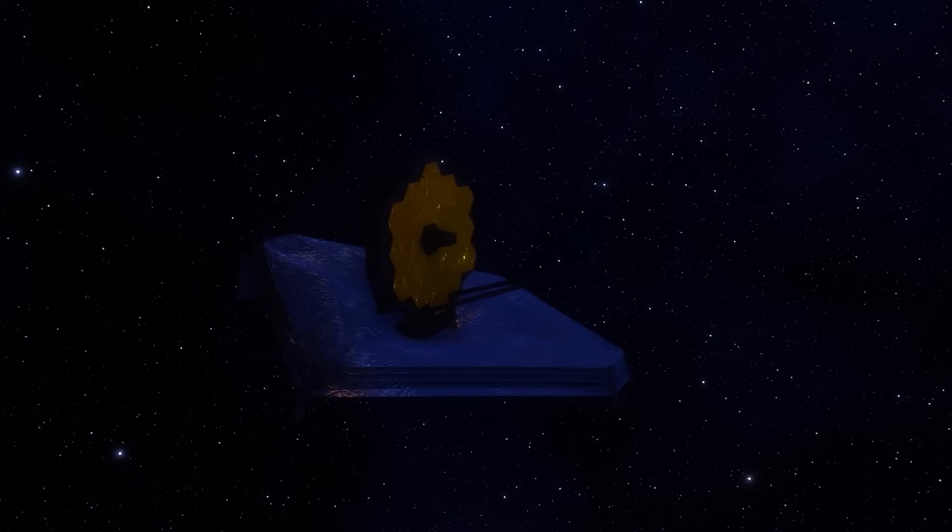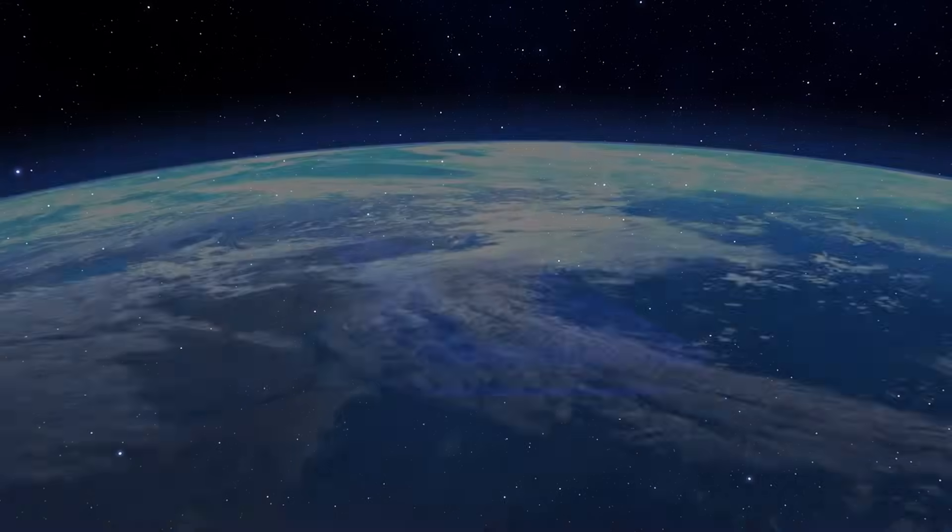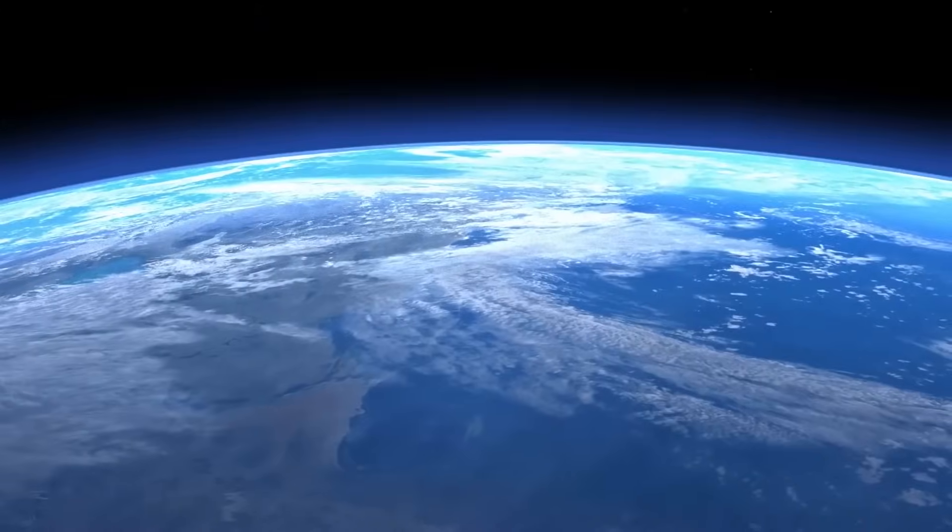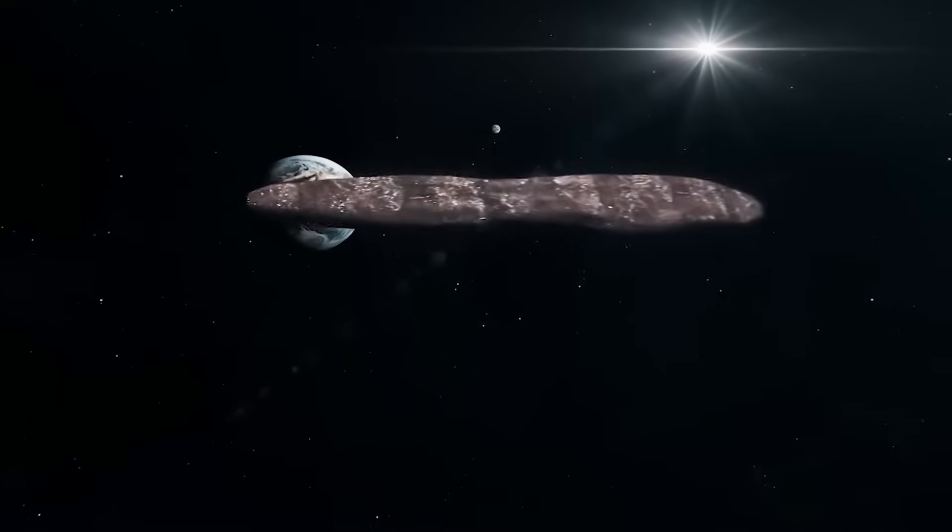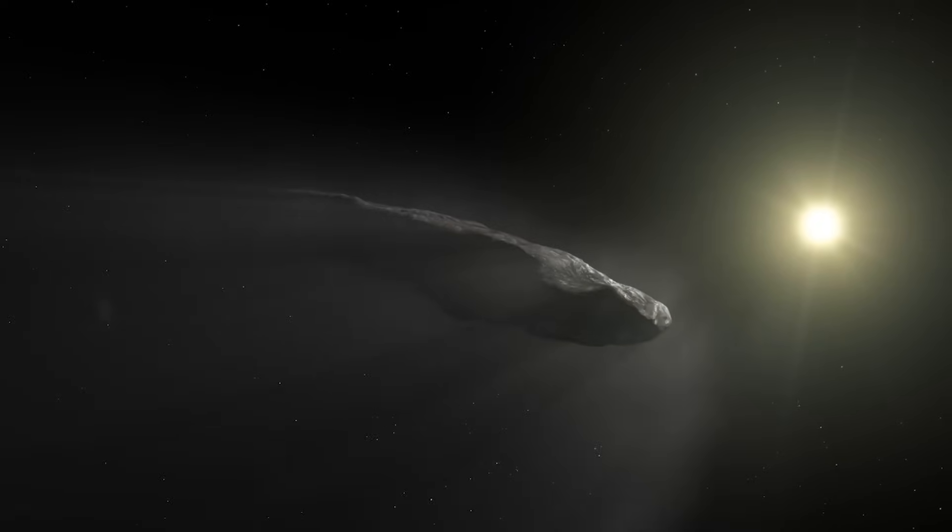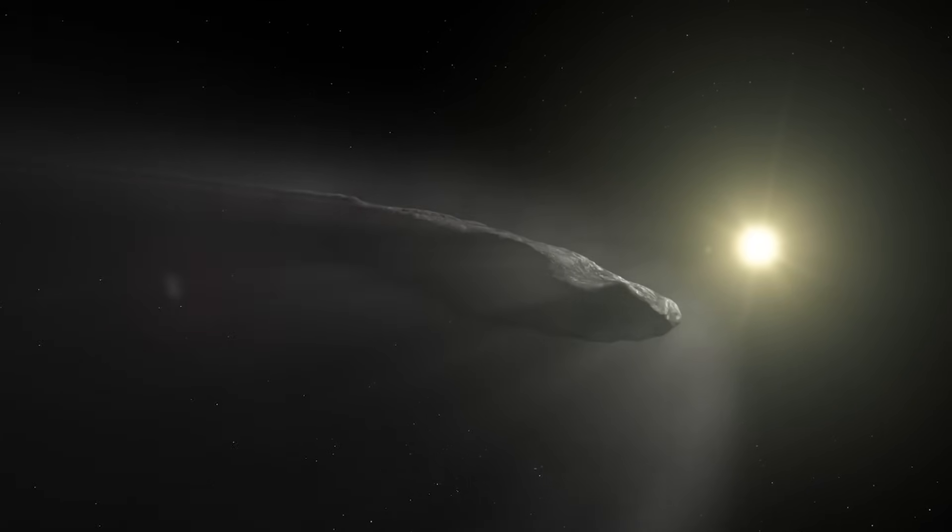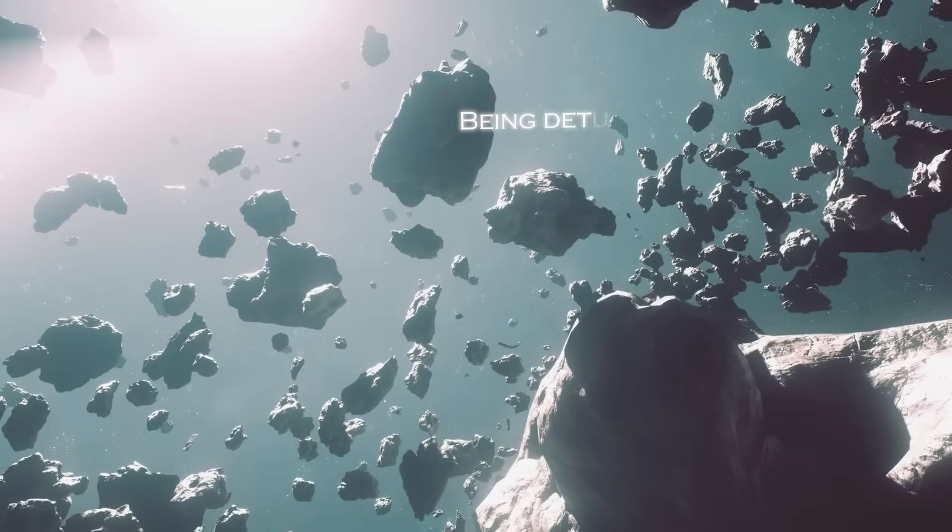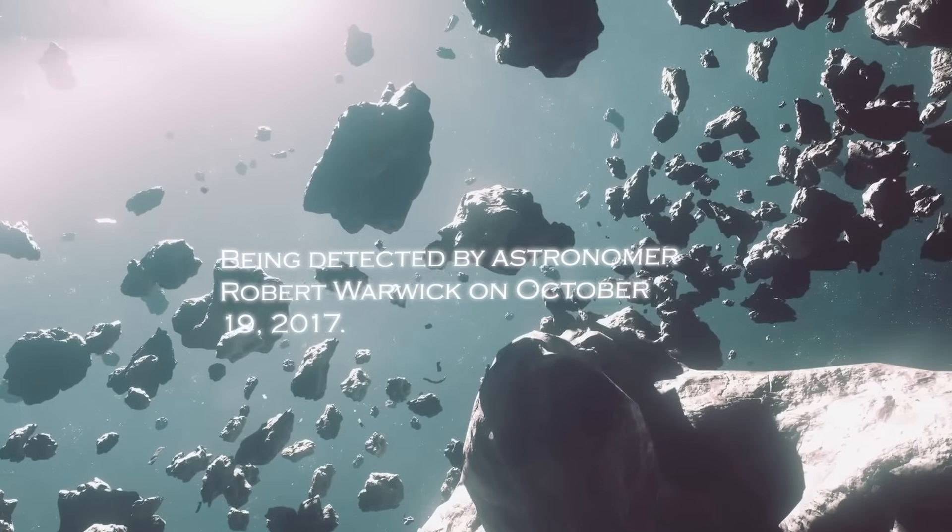Since their launch, these telescopes have revealed numerous findings in space, including the capture of images of large objects in space and the detection of a visitor coming from a considerable distance. This visitor, known as Oumuamua, is an object of interesting and peculiar origin that passes through our solar system. Its trajectory took it from another system to our own, being detected by astronomer Robert Warwick on October 19, 2017.